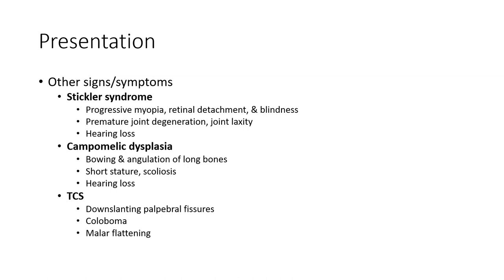Campomelic dysplasia features include bowing and angulation of long bones and sensorineural hearing loss. Treacher Collins syndrome features include down-slanting palpebral fissures and malar hypoplasia.